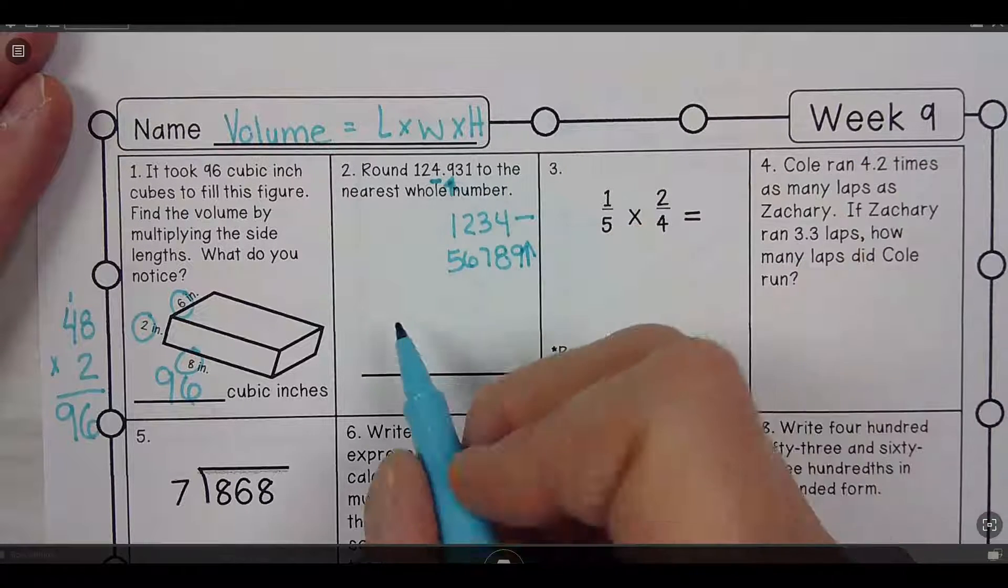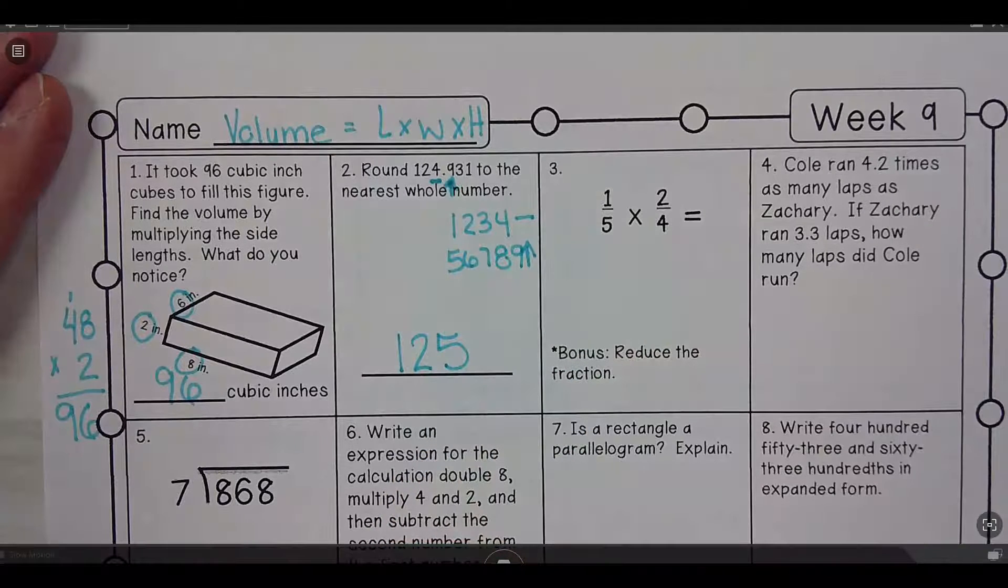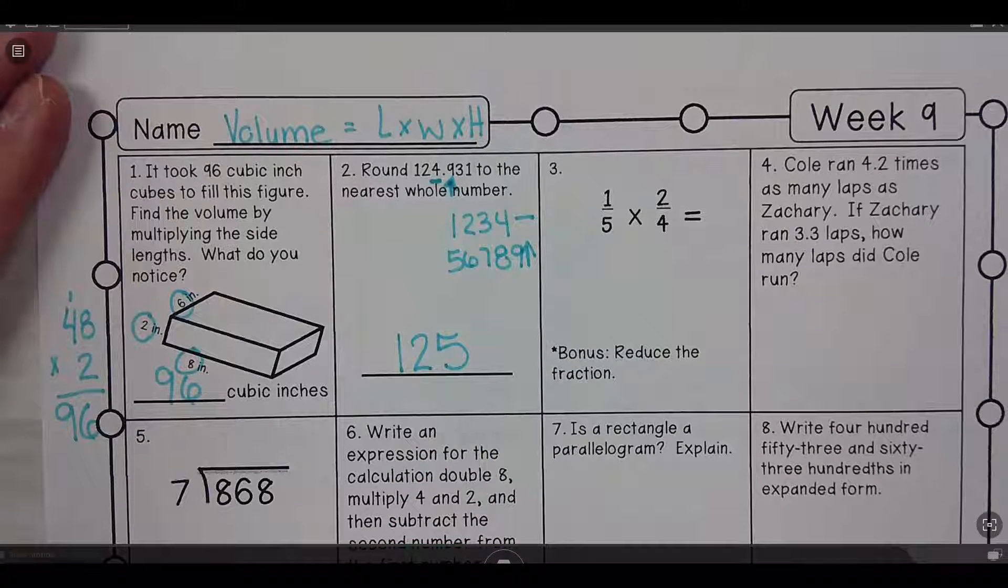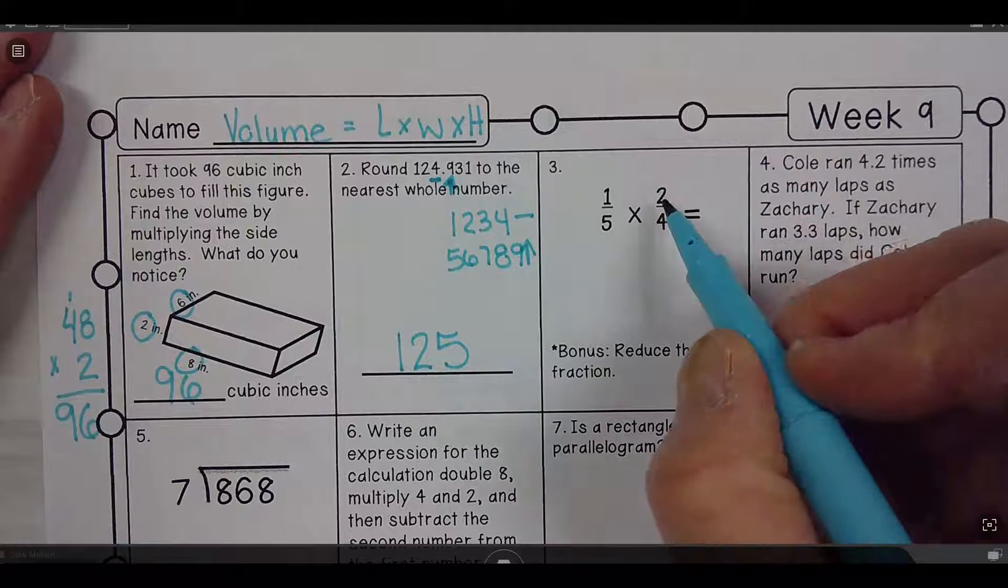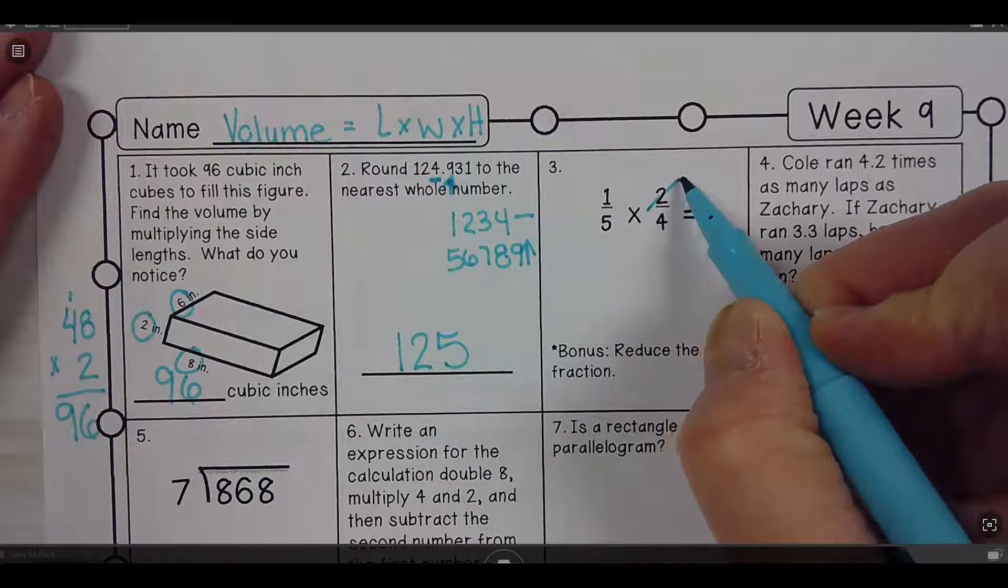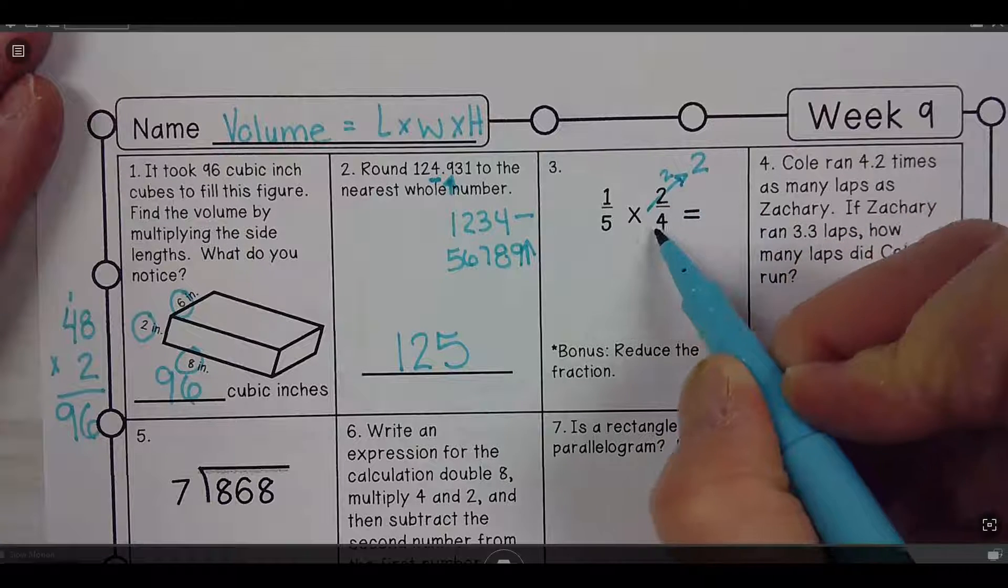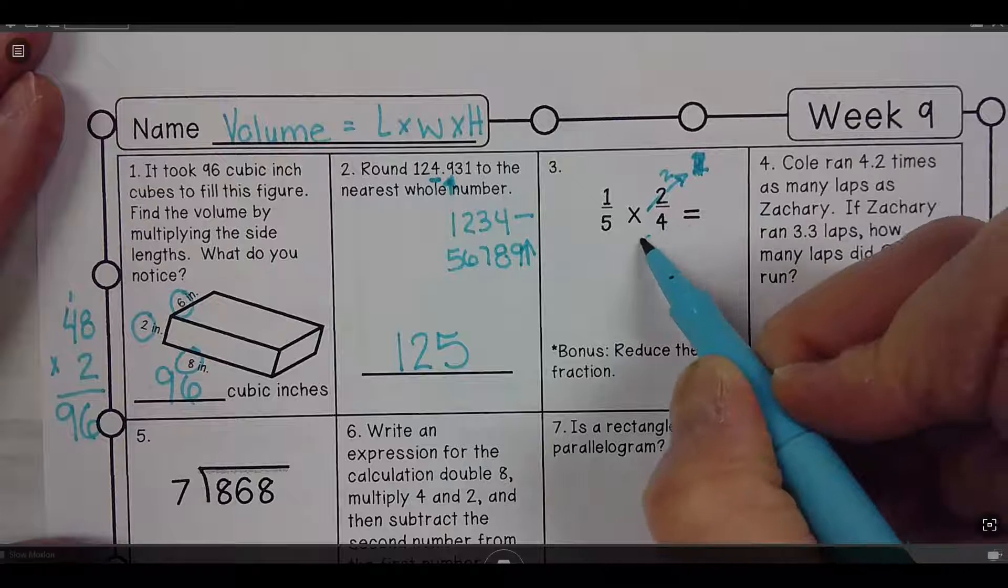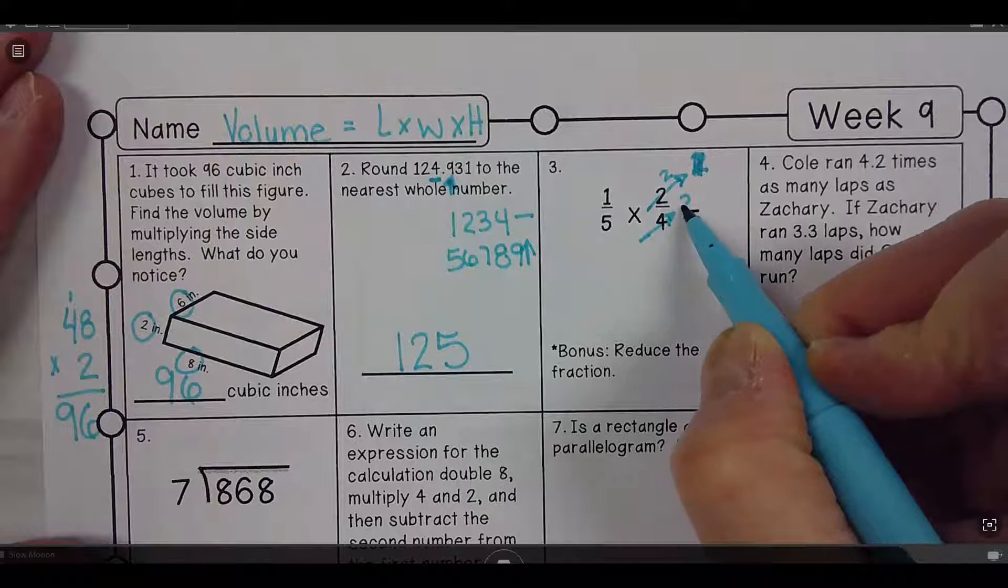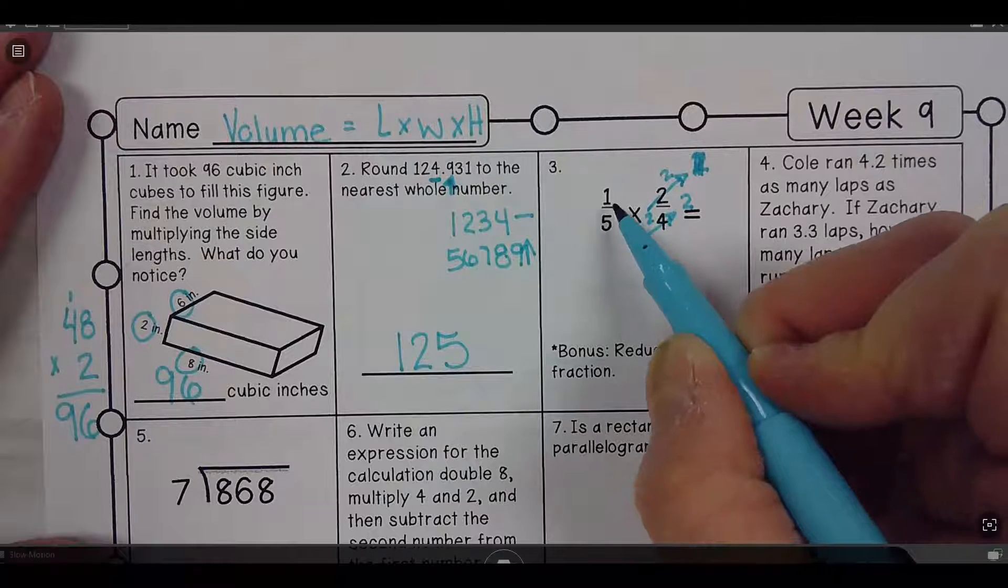Alright, so we've been multiplying fractions. I can divide this one by 2. 2 divided by 2 gives me 1, so 1 times 1 is 1 and 5 times 2 is 10.